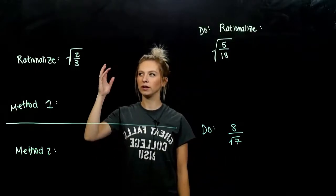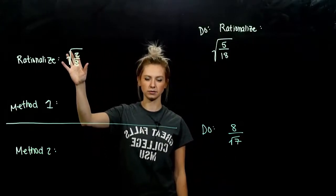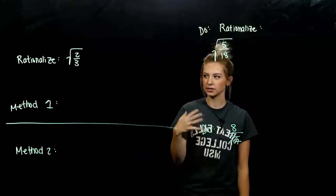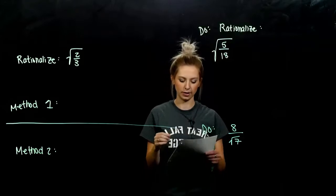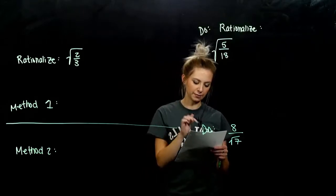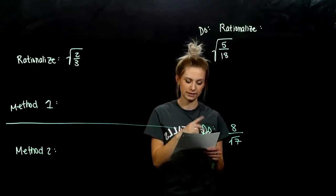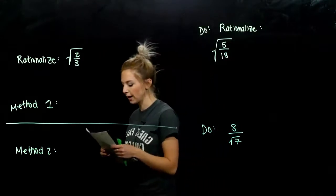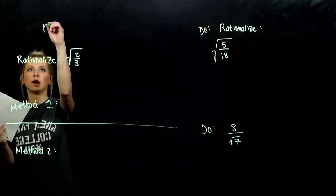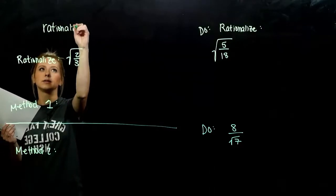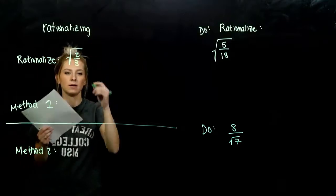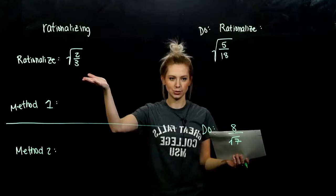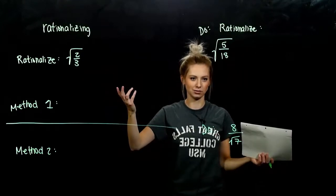In math, we want to find equivalent expressions to these radicals, but we don't want to have radicals in the denominator, because our standard notation doesn't have a radical living down there. The procedure for finding an expression that doesn't have a radical in the denominator is called rationalizing the denominator. What does it mean for something to be a rational number? It's not irrational — we don't have any radicals down there.